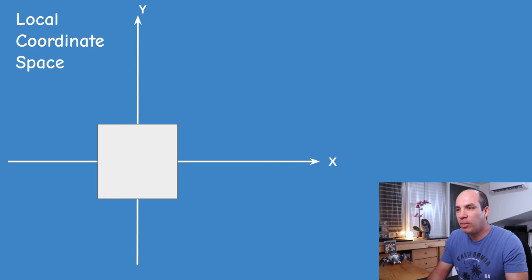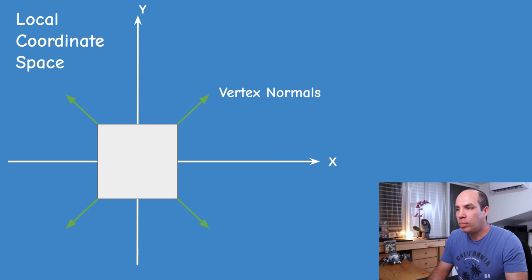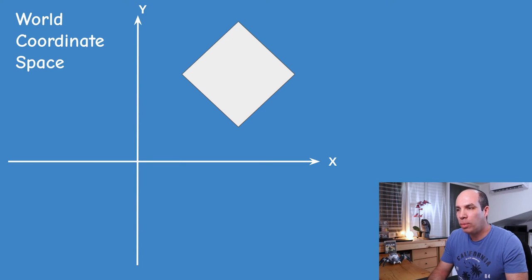This way we get a different diffuse factor at each pixel, providing the gradual transition visible in the example. However, there is one more thing to worry about: vertex normals are based on vertex positions in local coordinate space. They are loaded into the GPU buffer and don't change, same as other attributes. But during runtime, various transformations from local to world space can potentially change the orientation of the object toward the light.